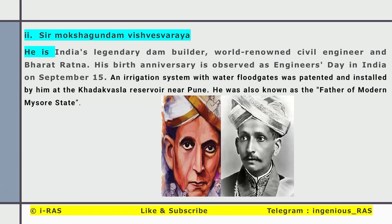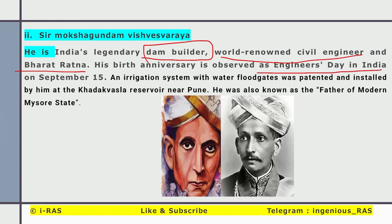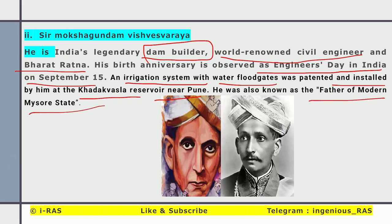Next, Sir Mokshagundam Visvesvaraya — popularly known as Sir M. Visvesvaraya. He was a legendary dam builder and world-renowned civil engineer and Bharat Ratna awardee. His birth anniversary on 15th September is observed as Engineer's Day in India. He developed an irrigation system with water floodgates, patented and installed at the Khadakwasla reservoir near Pune. He was also known as the father of modern Mysore state, though he is less famous today.